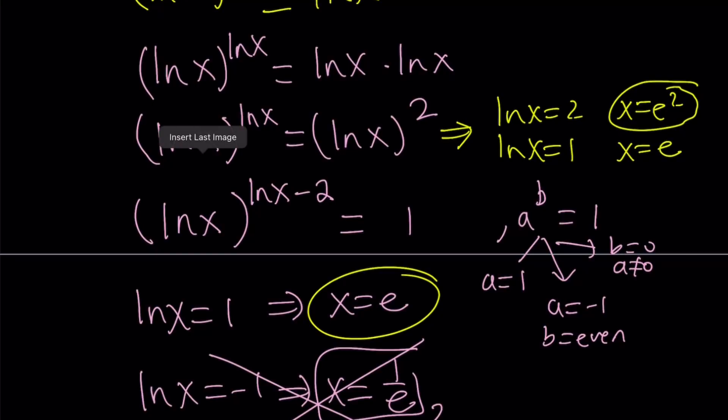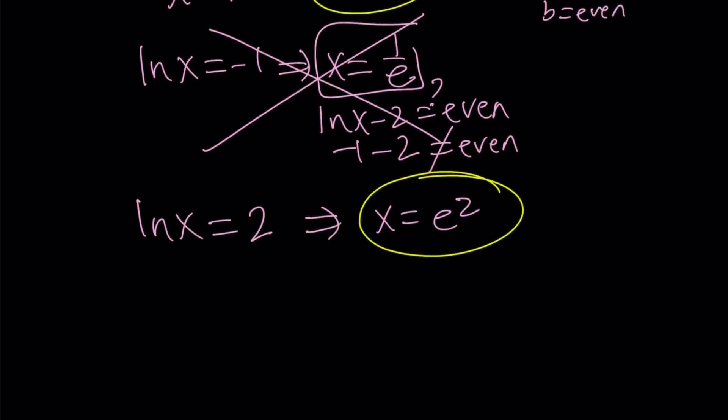And negative one, you already know that it's not going to work. And you can easily check that here, because if ln x is negative one, you get negative one to the power of negative one, and that does not equal negative one squared. So we have that problem there. That's why we only have two solutions. Make sense? I hope it does.